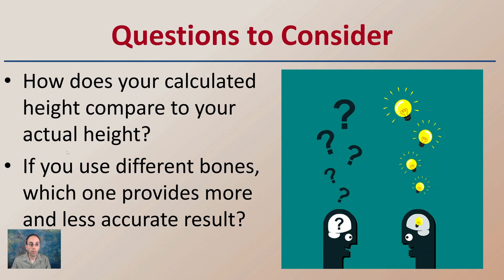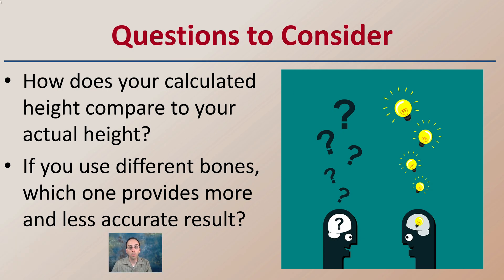Questions to consider: How does your calculated height compare to your actual height? And how may this be applied to unknown skeletal remains? You may want to use different bones and find out which one provides more or less accurate results. Some bones provide a closer result to the actual height, but they're all just an estimation — so which bone provided the most accurate results for you?